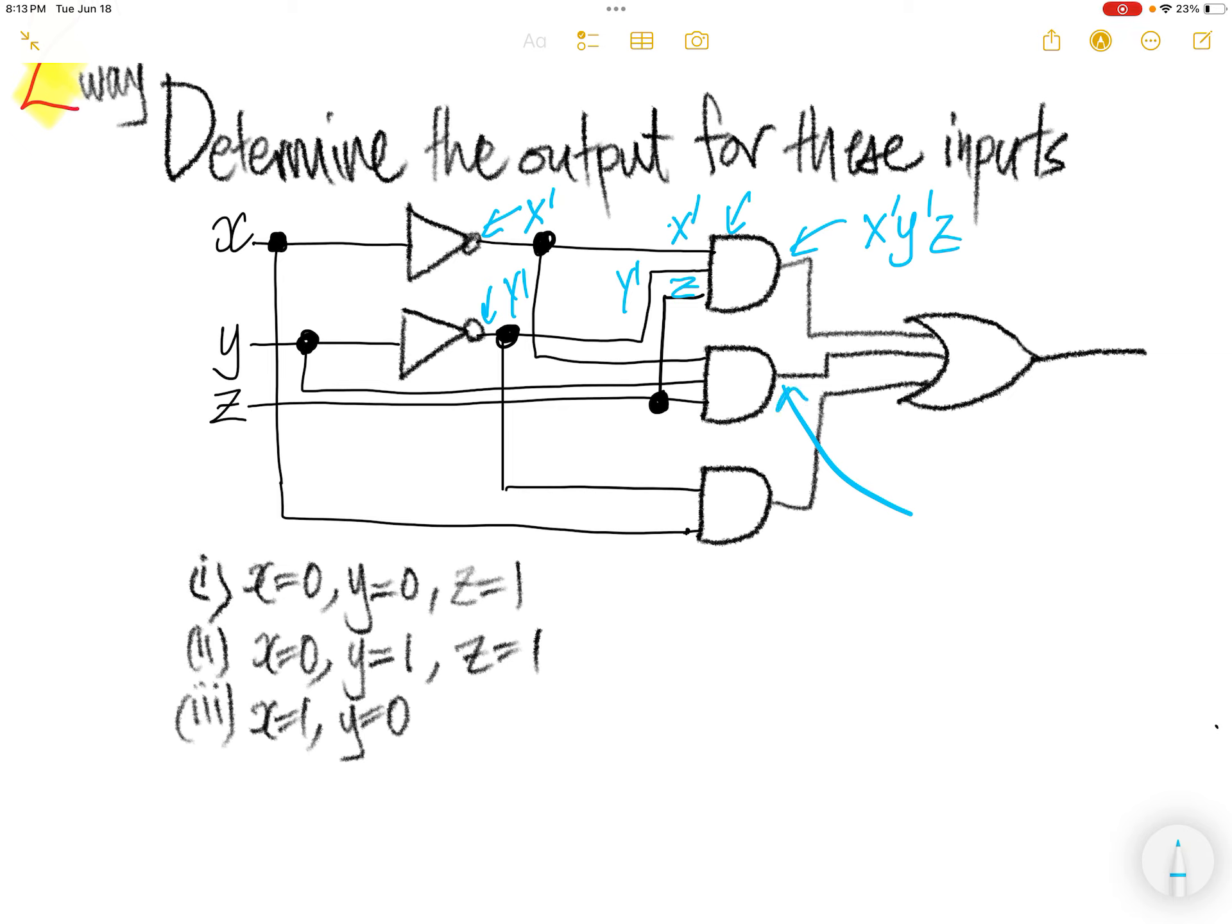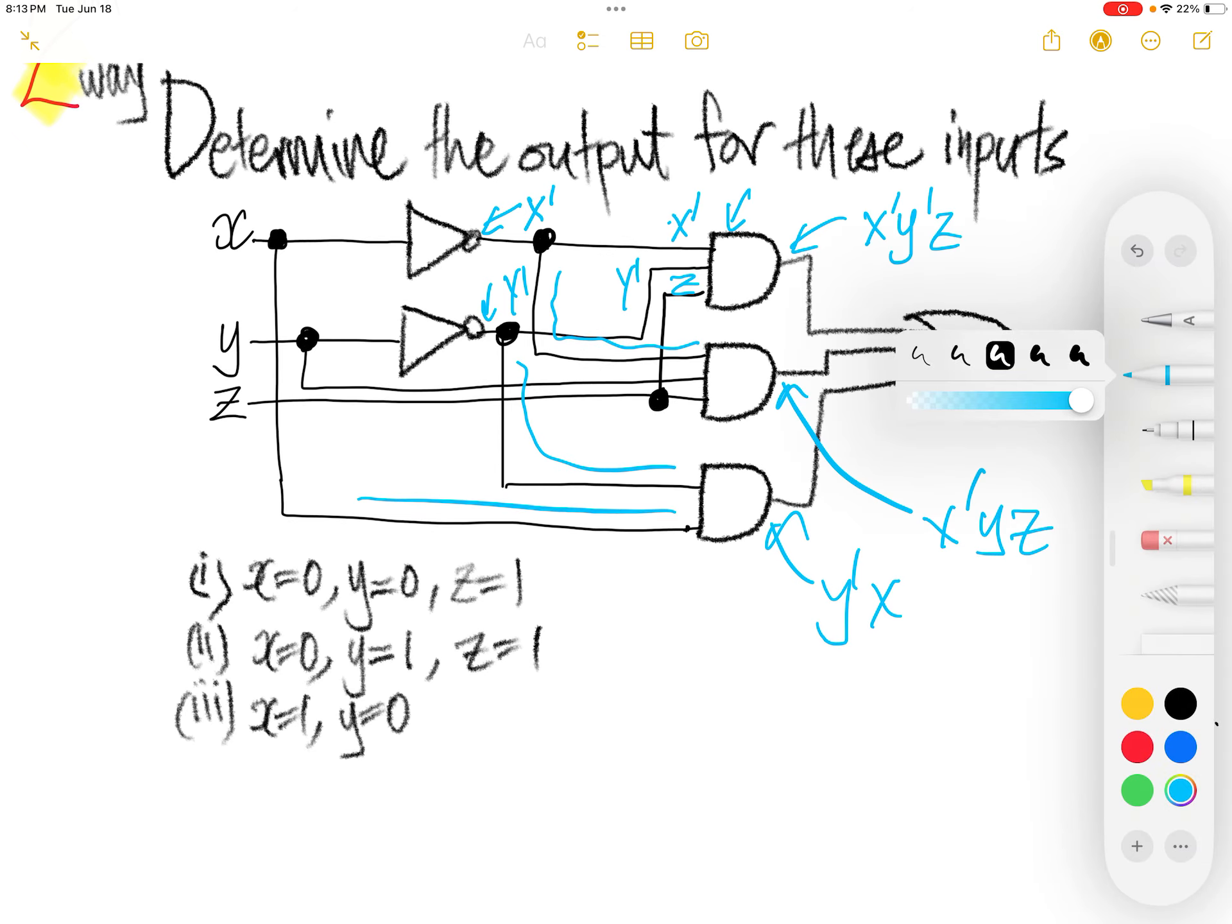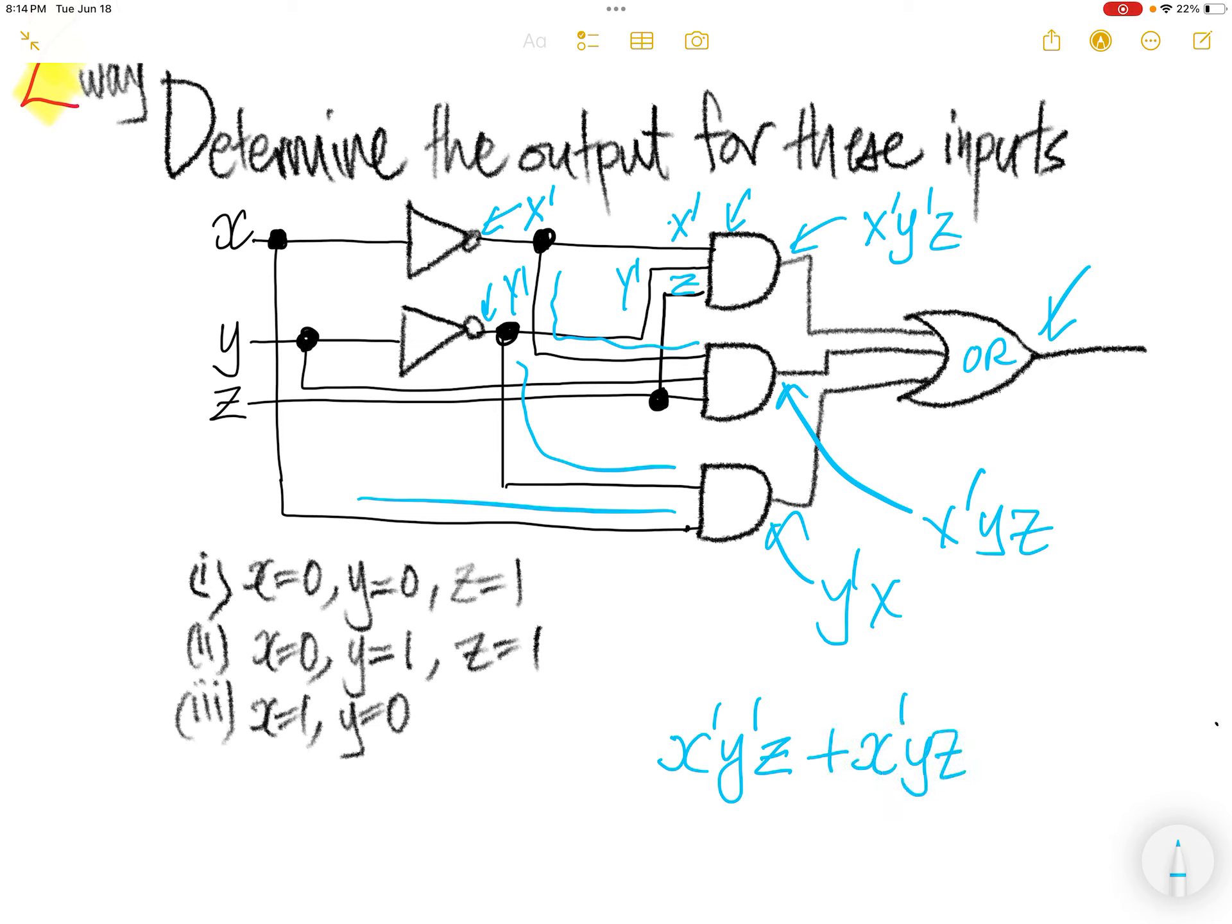Let us evaluate the output here. It will be x prime, y, and then z. The output here is y prime x. So let us write down the output here. The output for the OR is x prime, y prime, z, or x prime, y, z, or y prime x.